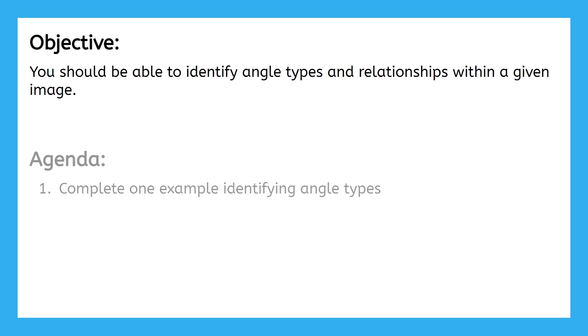First, we'll complete one example of identifying angle types, and then we'll complete two examples comparing angles to each other. You'll also learn all the vocabulary you need as we go. Our first example is going to use three vocabulary words: acute, right, and obtuse.